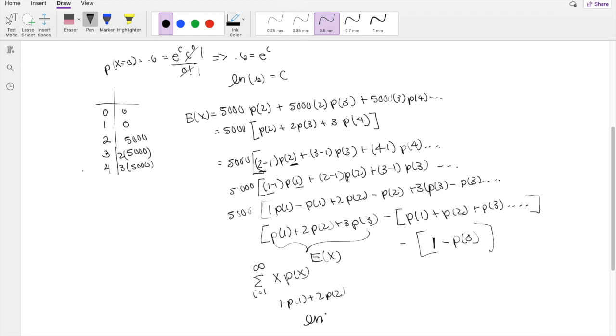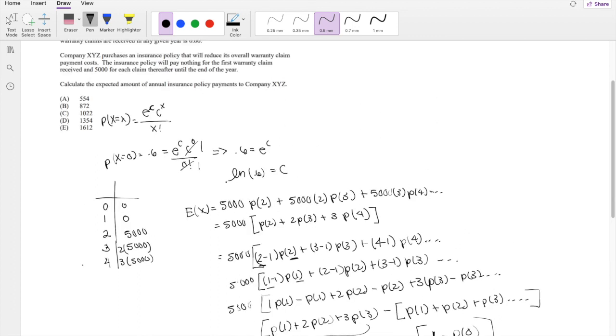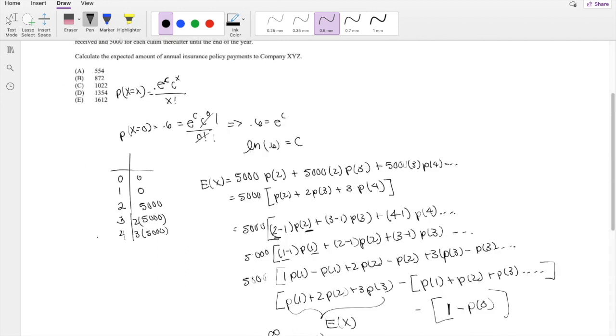So the expectation for x for exponential distribution is just lambda, which we know is to be natural log of 0.6. So I can't forget the 5,000 on the outside, minus 1 minus the probability of 0. The probability of 0 we know is right here, is equal to 0.6.